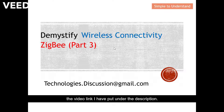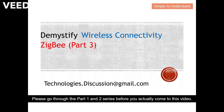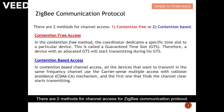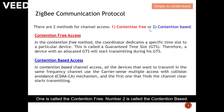The video links I have put under the description, so please go through the Part 1 and Part 2 series before you come to this video. There are two methods for channel access for ZigBee communication protocol: one is called the contention-free, and number two is called the contention-based.